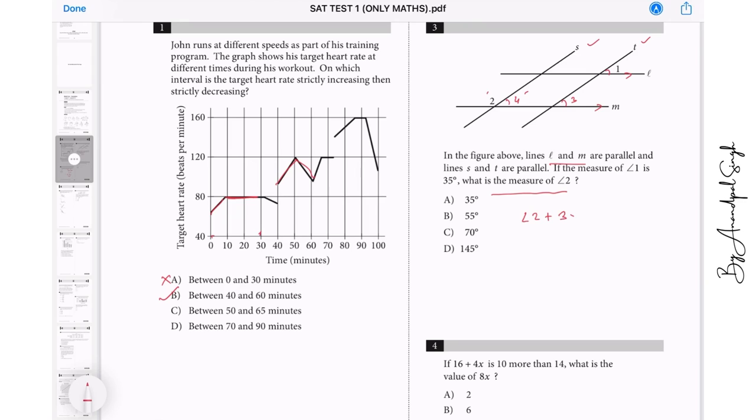And then two and four is equals to 180 degrees, that is their linear pairs. So two plus angle four, which is same as angle one, should be equals to 180 degrees. So when I subtract it, I get 145 degrees. It means x and this is the right answer.